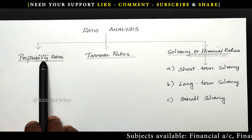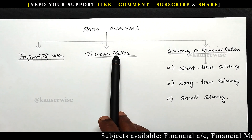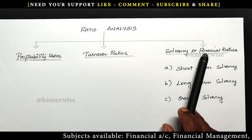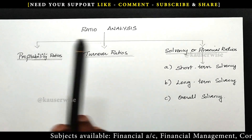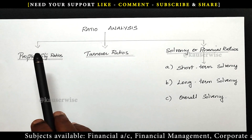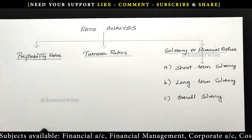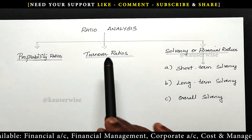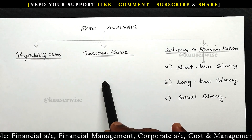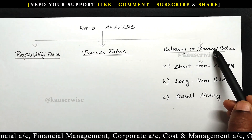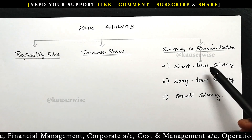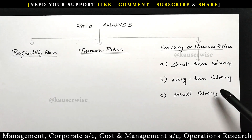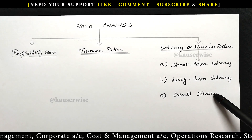Number one, profitability ratios. Number two, turnover ratios. Number three, solvency ratios. Under profitability ratios, it has 15 components — 15 ratios. Under turnover, 10 ratios are there, and under solvency, it has three divisions: short-term solvency, long-term solvency, and overall solvency.